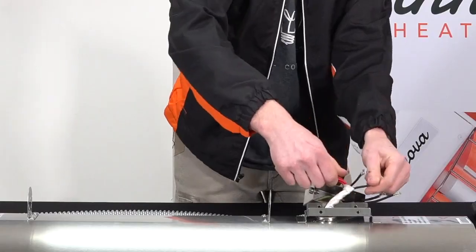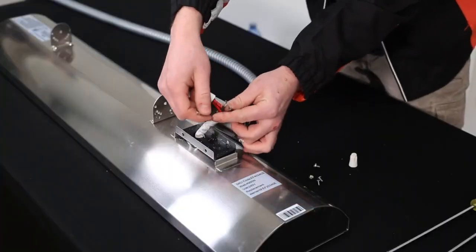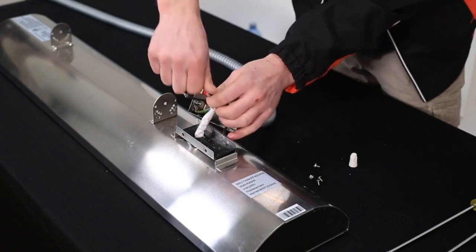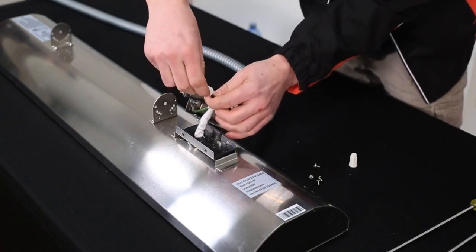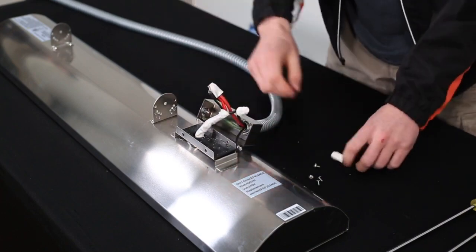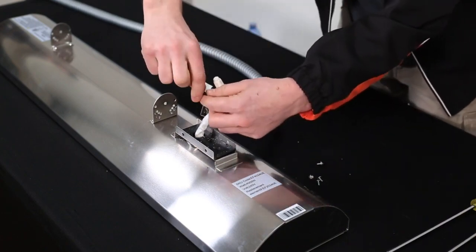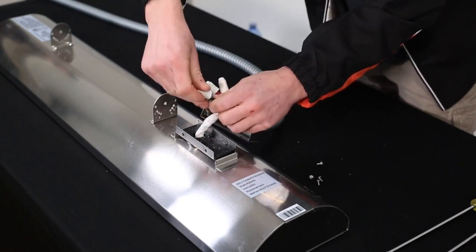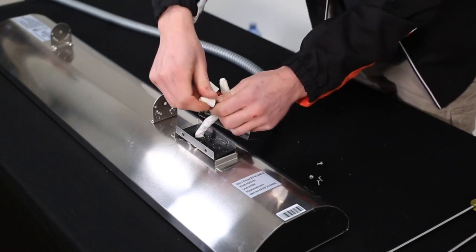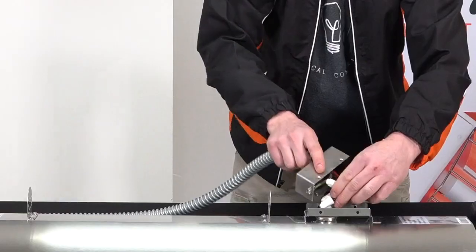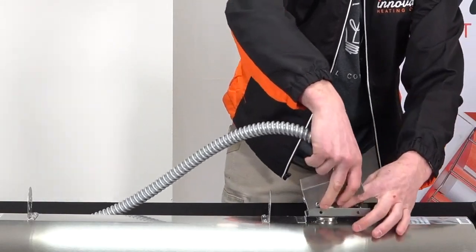For the black wires, you attach one together and the other one together. Lastly, close it all up. Put the four screws back.